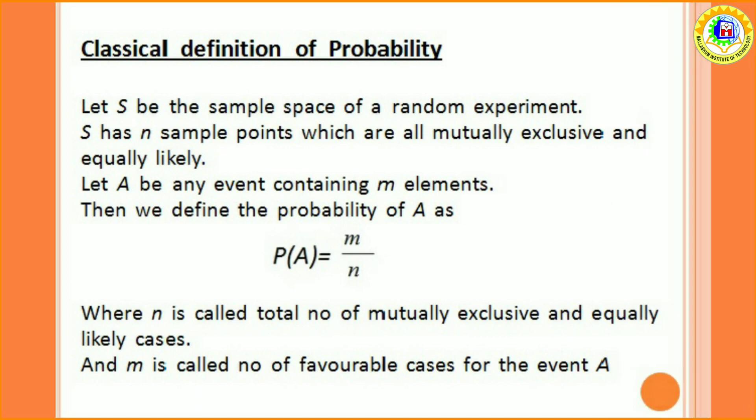Now, I discuss about classical definition of probability. Let S be the sample space of a random experiment. Suppose S has N sample points which are all mutually exclusive and equally likely. Equally likely means they have equal chance to occur. Also, let A be any event containing M elements. Obviously, A is subset of S.